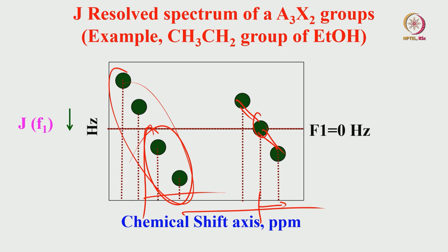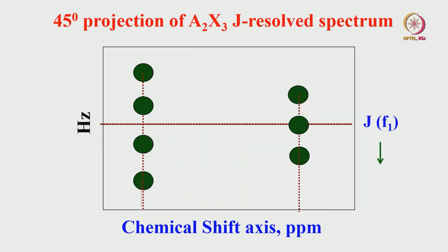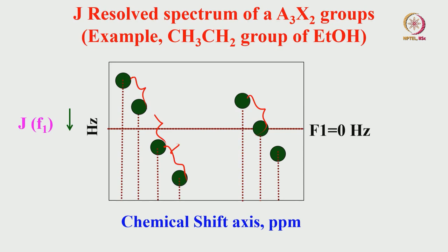In both the CH and CH₂ cases, the center corresponds to chemical shift. In the indirect dimension, we can easily measure J-coupling. Very easily you can get J-coupling information. Another thing we can do is notice that everything appears tilted by 45 degrees — there is a 45-degree tilt present.